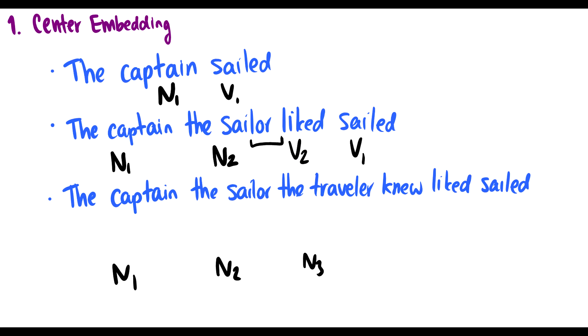The traveler knew the sailor, so this verb knew is linked to the traveler. The sailor liked the captain, so liked is connected to the sailor. And the captain sailed. This is center embedding.